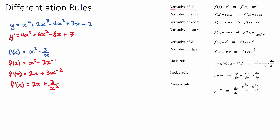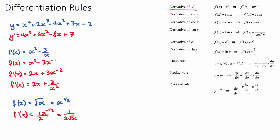One more example for the power rule: if f(x) equals root x, rewrite it as x to the power of a half using index rules. Deriving brings the half down, leaving x to the power of negative a half. Using index laws, x to the negative half equals 1 over 2 root x.